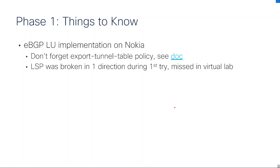When we did the first interconnection, we found some issues that didn't go as planned, especially on SP1's side. The ASBRs on SP1 side were Nokia, and on Nokia you have to make sure you don't forget to implement a configuration called 'export channel table policy'. It's mentioned in their documentation — that configuration is present to stitch LDP to BGP label unicast, and if you don't have it, the LSP will be broken. That's what happened during the first try. Unfortunately this was missed in our virtual lab because at the time we didn't have Nokia virtual machines available.